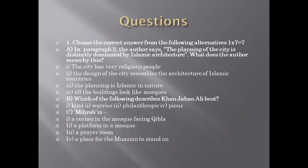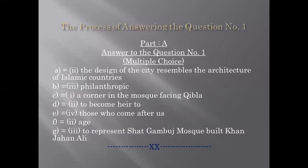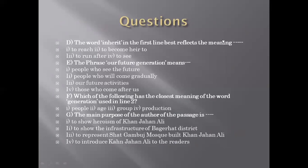Next, question b: which of the following describes Khan Jahan Ali best? Options: kind, warrior, philanthropic, pious. Out of these four alternatives, you should choose the best one to describe Khan Jahan Ali. All are adjectives that go with Khan Jahan Ali, but 'philanthropic' is the word that best describes him in all respects. So the answer on your answer script will be written as: b = third option — philanthropic.